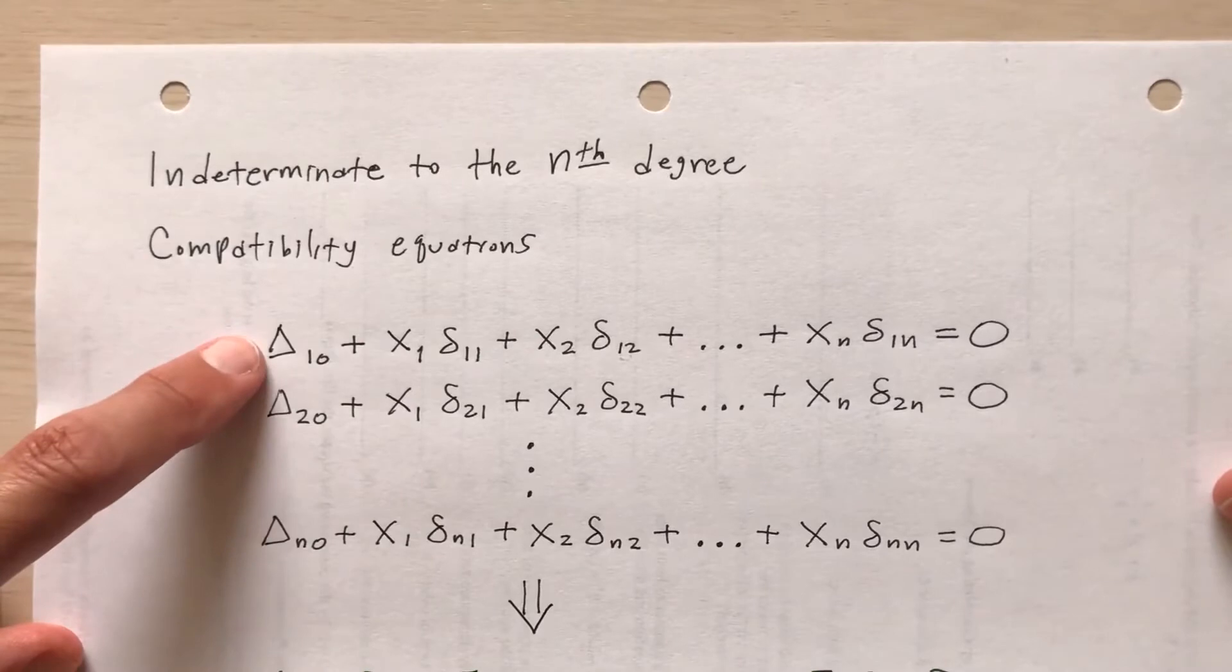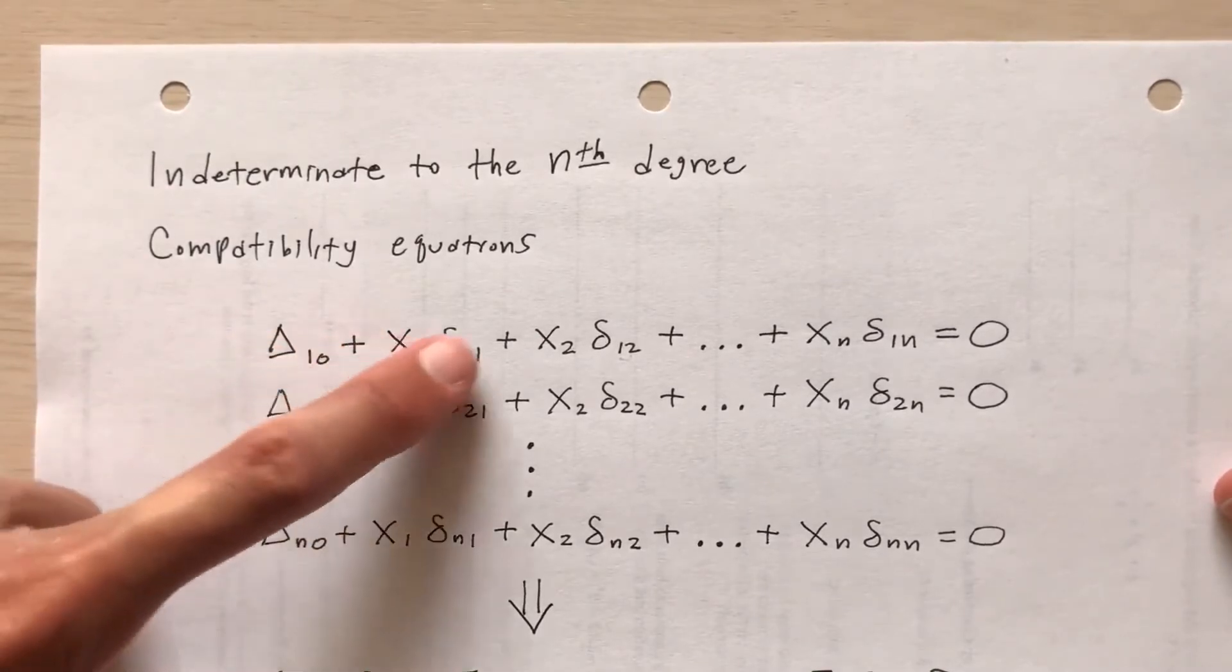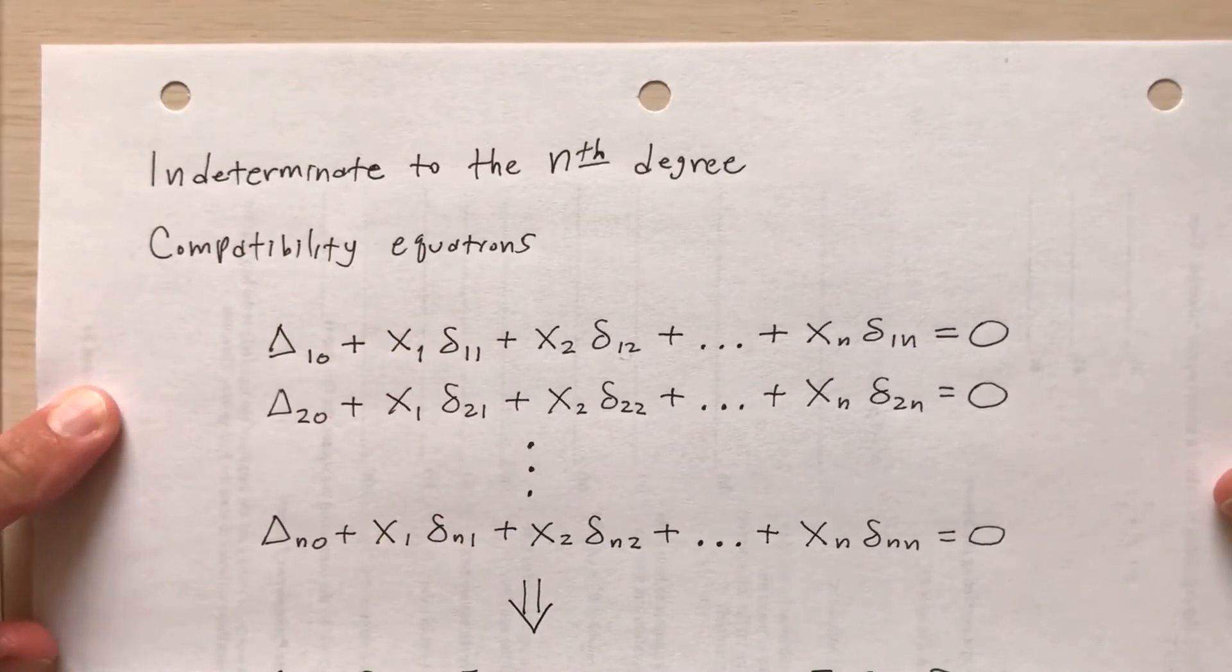Remember that the deltas represent the real deflections, the x's the redundance, and the little deltas represent the flexibility coefficients.